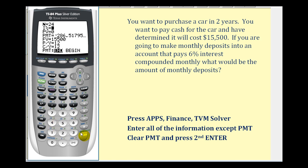Press Enter, then go back down to PMT for payment, clear the old amount, and press Alpha Enter again. So now if we only save for two years, we have to save six hundred nine dollars and forty-seven cents every month.